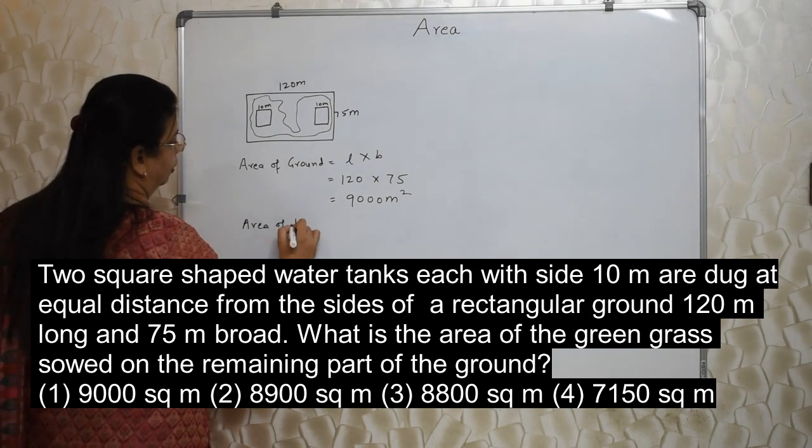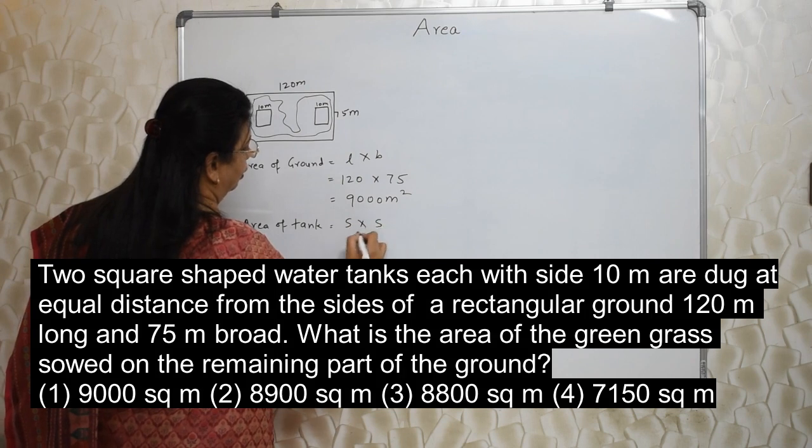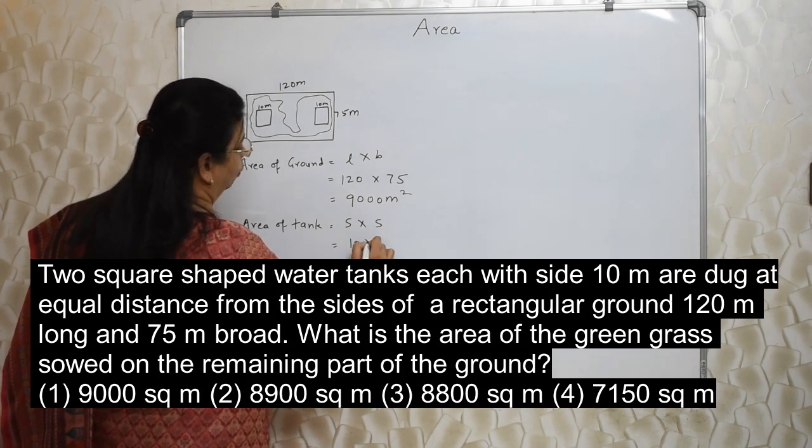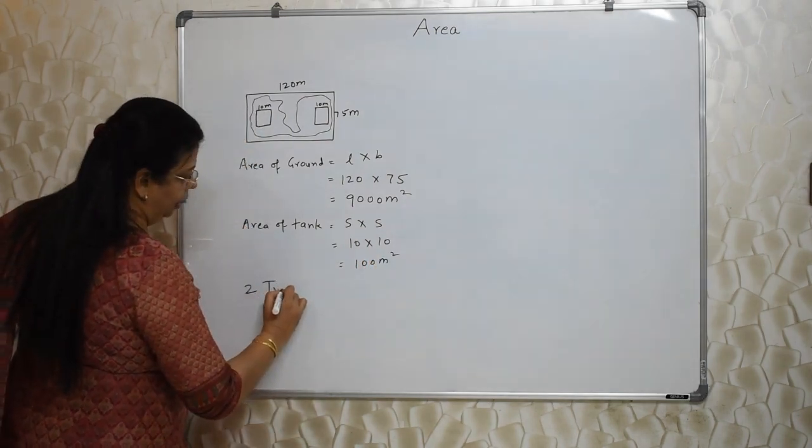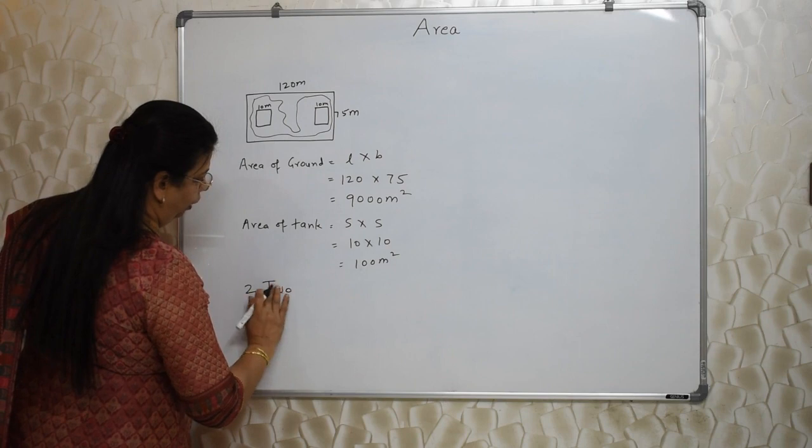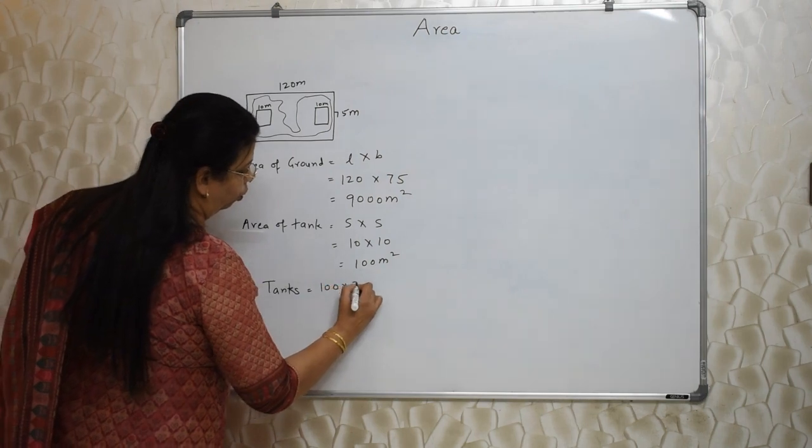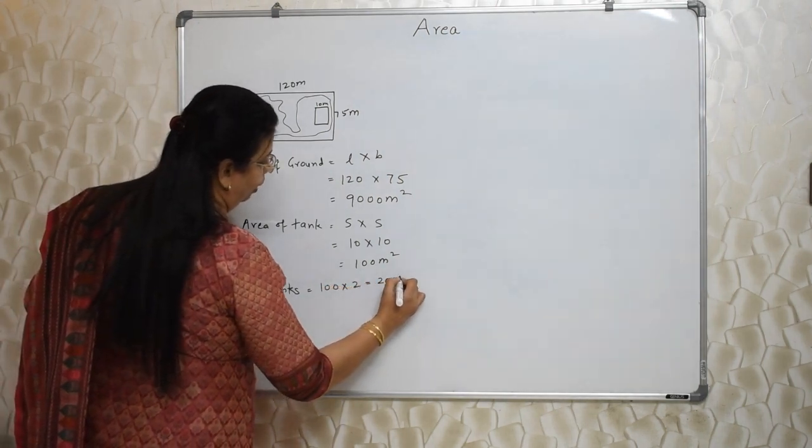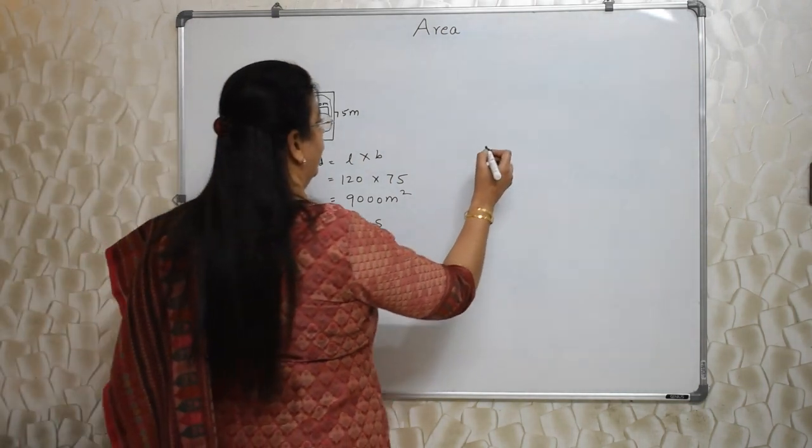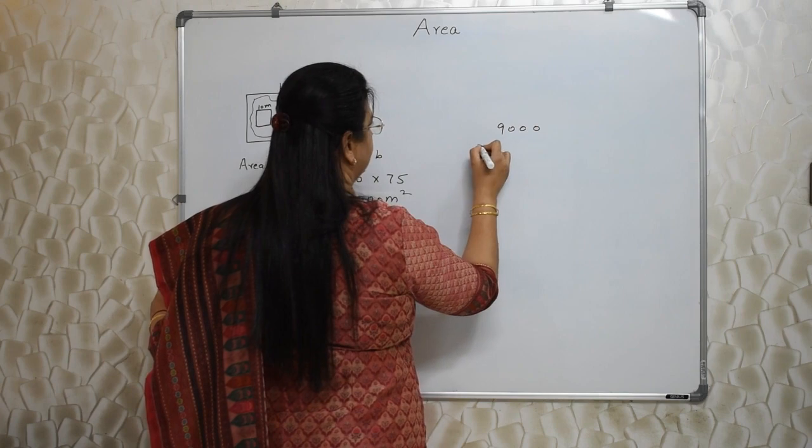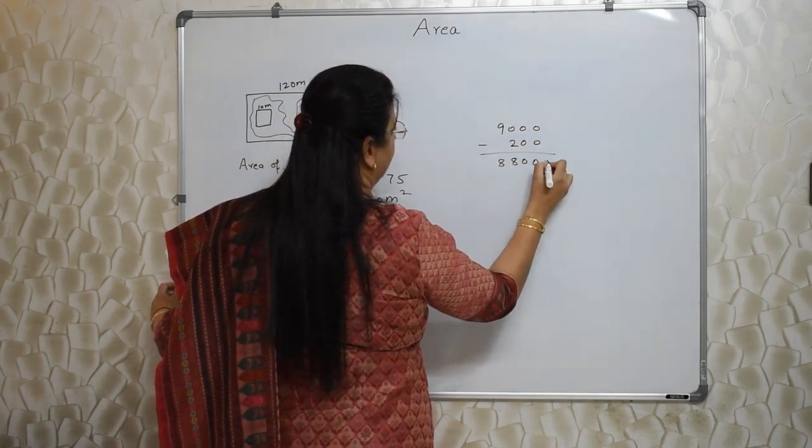Now area of tank is how much? It is square in shape. So side into side. That is 10 into 10. That is 100 meter square. But there are two tanks. Please remember. Two tanks. Not one. So it is 100 into 2. So 200 meter square area is occupied by those two tanks. So how much is the remaining area for the grass? 9000 minus 200. That is 8800 meter square.